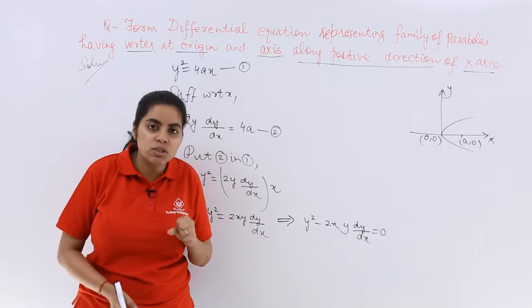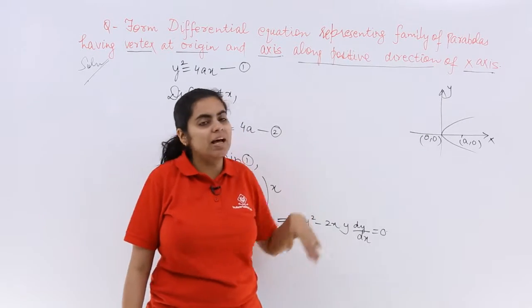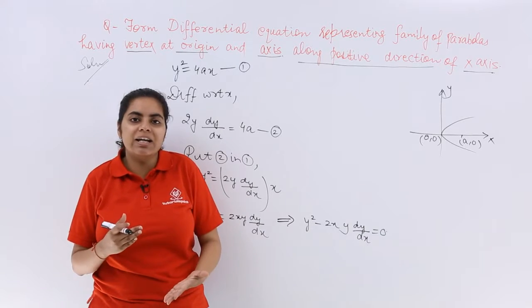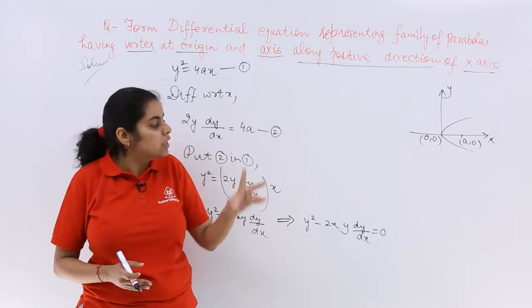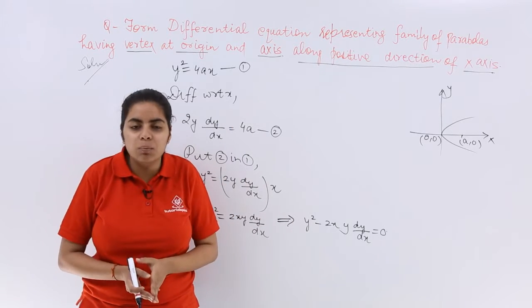If the parabola was not mentioned as the positive direction of the x-axis but say the positive direction of the y-axis or something, then the main equation would change. The procedure would remain almost the same.